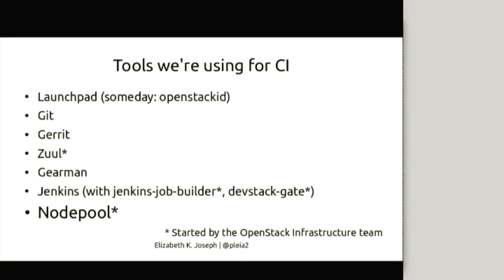We're using a bunch of different tools for this CI system, and again it's all open source, so other companies and projects have started to replicate this. We're using Launchpad for authentication — that's sort of a legacy thing. Some of the original OpenStack people were Ubuntu people and they used Launchpad, so it got pulled into a lot of our things. We've had a hard time breaking free of it, partially because we don't have a good bug solution for OpenStack and authentication is easy with it.